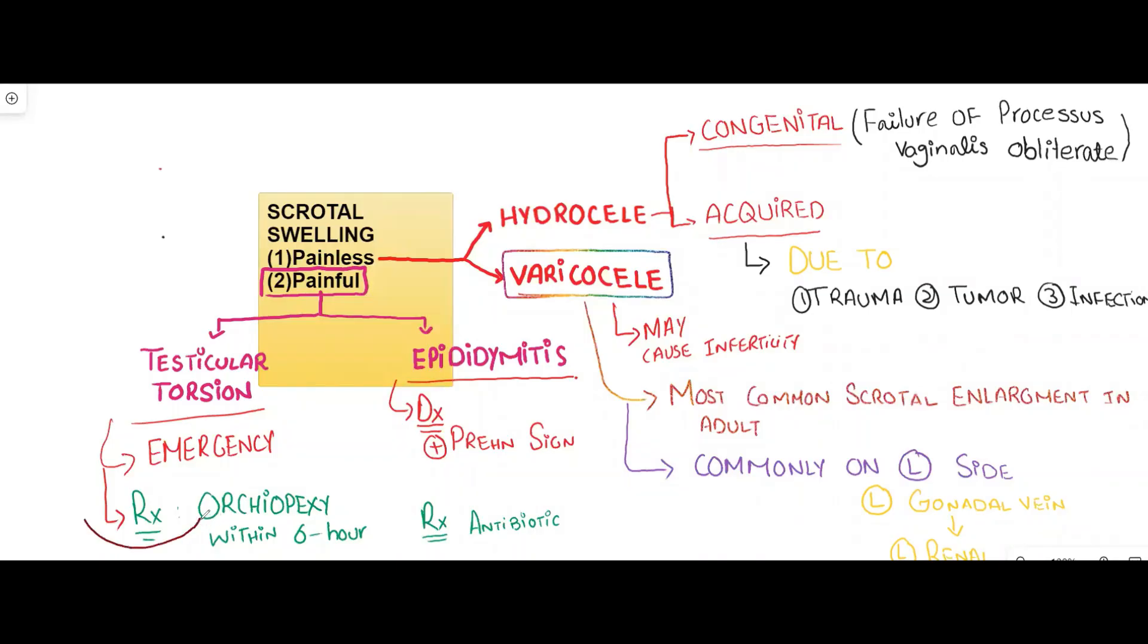Orchiopexy should be done on both sides because of the recurrent risk of testicular torsion. Congenital hydrocele increases the risk of indirect inguinal hernia if it is untreated.